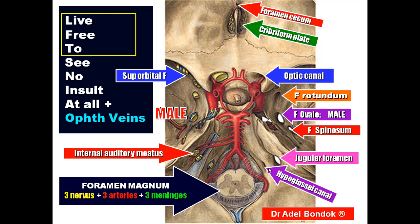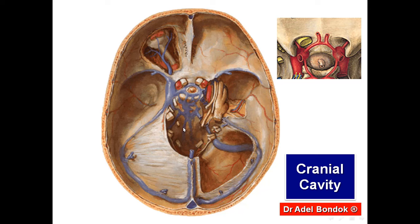This is the hypoglossal canal, which transmits the hypoglossal nerve. This is the cranial cavity. This is foramen cecum again. This is the sphenoparietal sinus, which drains into the cavernous sinus.